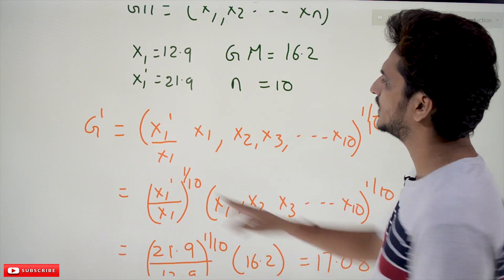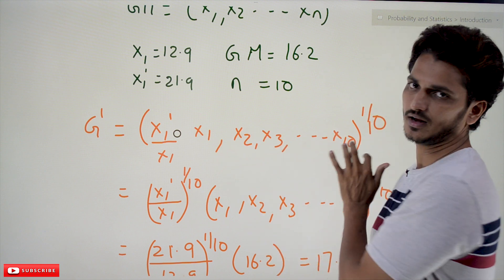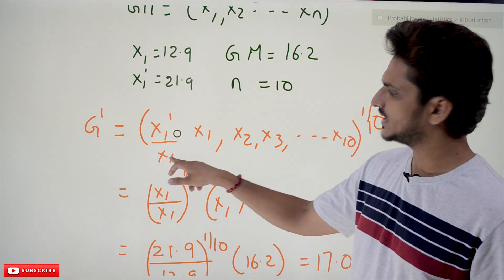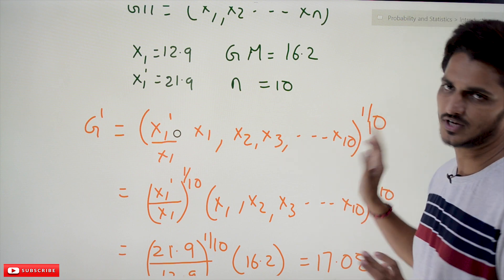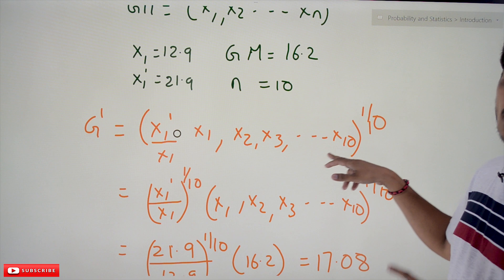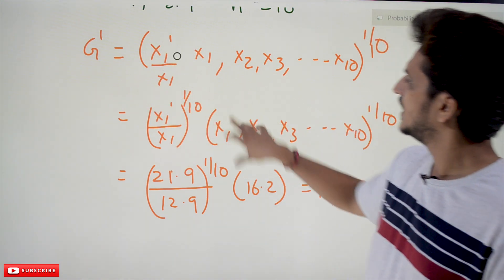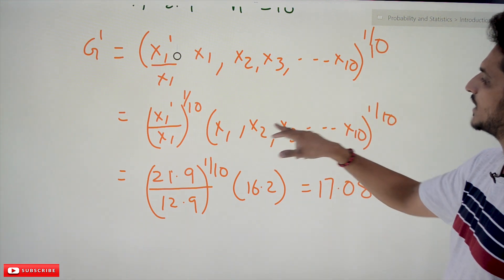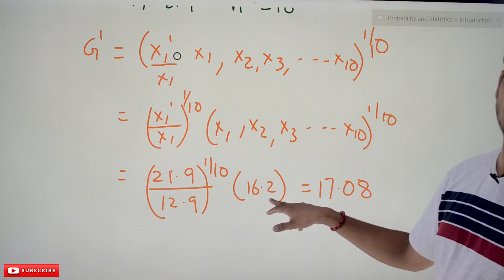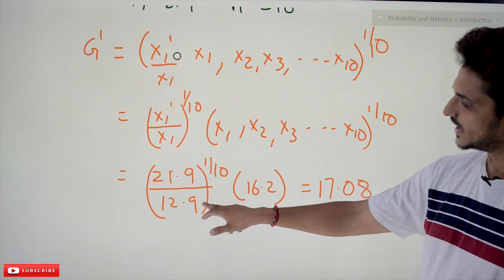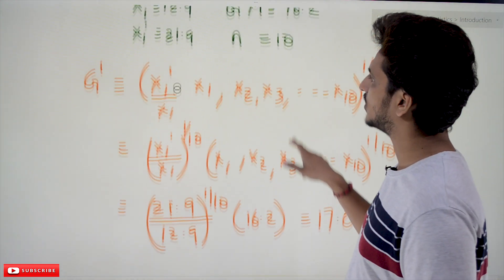To calculate the correct geometric mean G', we write: G' = (x1' × x2 × x3 × ... × x10)^(1/10). We can rewrite this by multiplying and dividing by x1: G' = (x1'/x1)^(1/10) × (x1 × x2 × ... × x10)^(1/10). The second part equals the original geometric mean, which is 16.2. So G' = (21.9/12.9)^(1/10) × 16.2 = 17.08. This is how we calculate the correct geometric mean.